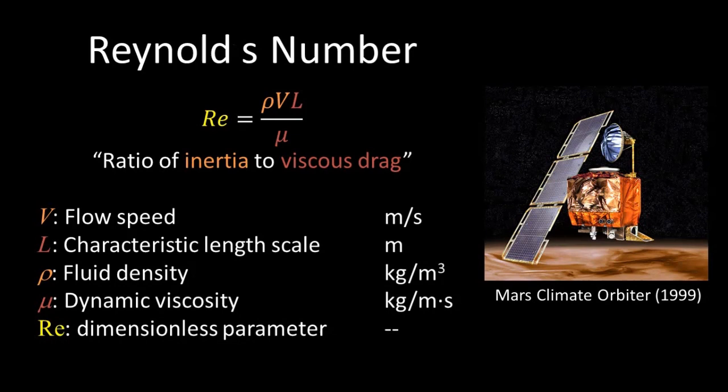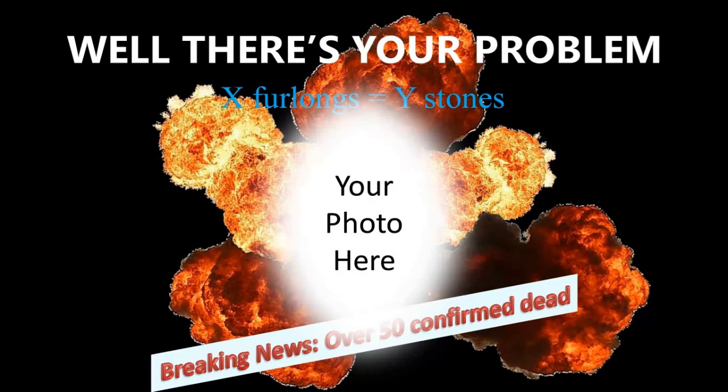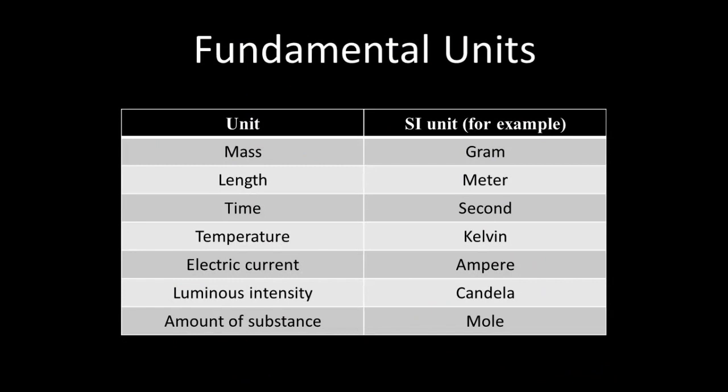Multi-million dollar space probes have been lost because someone botched the units in one small calculation. If units are so very important, why go unitless? Units are, indeed, of the utmost importance. At the end of your calculations, you know absolutely that the units must match up on both sides of the equation. If you finish your calculations and insist that the answer is x furlongs equals y stones weight, you are getting fired before you instigate an engineering disaster that, at best, costs the organization a lot of money, or at worst, kills a bunch of people. Getting the units right is critically important. But it's also what some may call a solved problem. Using dimensionless parameters means solving the unit's problem first before getting to the real heart of the experiment.